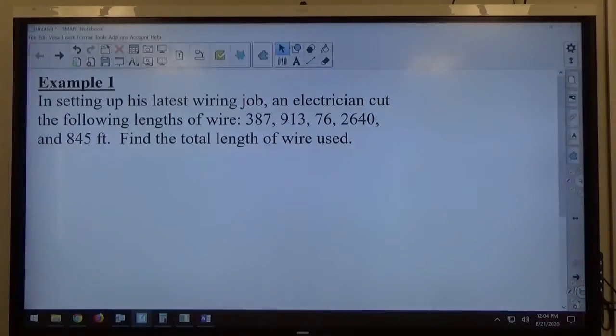All right, example one. In setting up his latest wiring job, an electrician cut the following lengths of wire: 387, 913, 76, 2,640, and 845 feet.